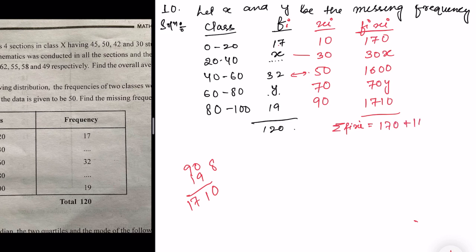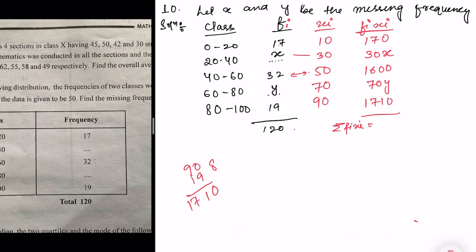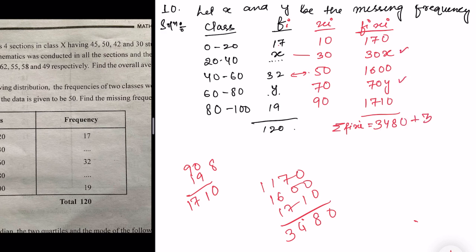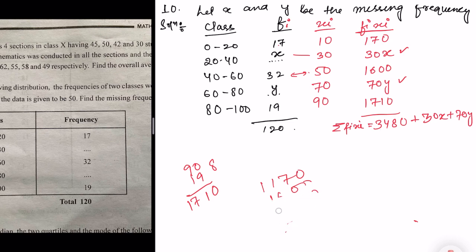Calculating the sum of the constant terms: 170 + 1600 + 1710 = 3480. So the total summation of fi·xi = 3480 + 30x + 70y.